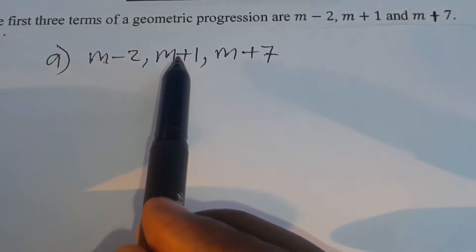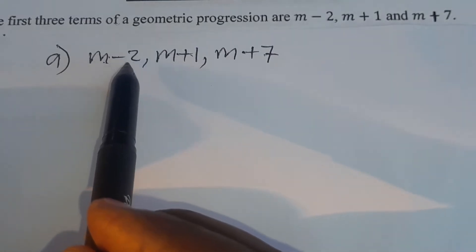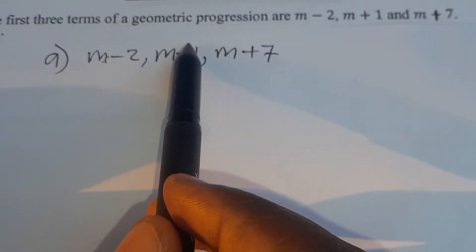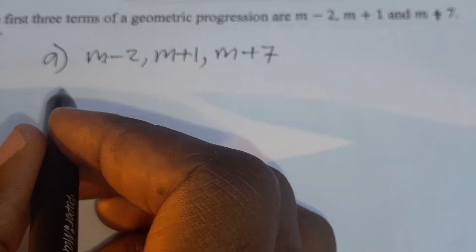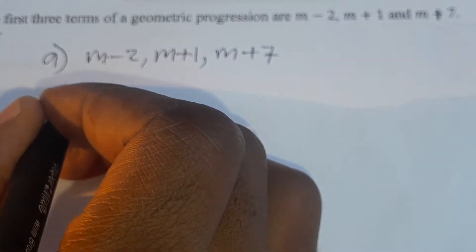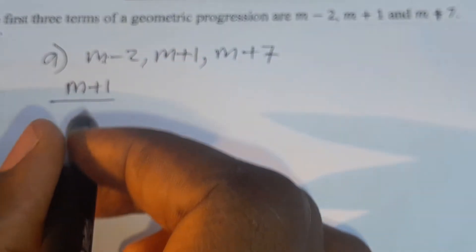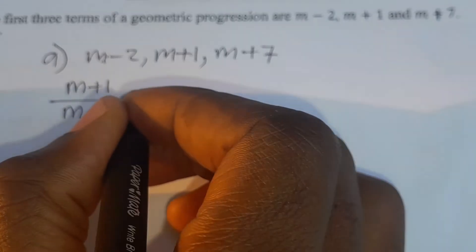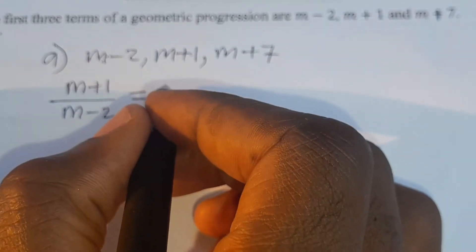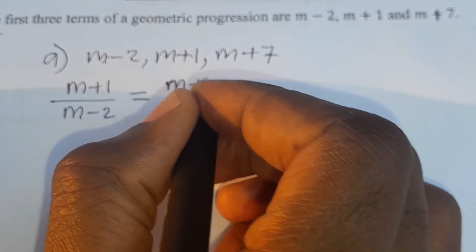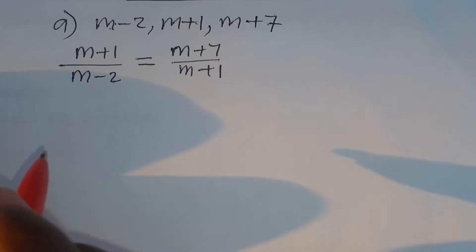We are going to divide the next term by the previous term and equate it to the next term divided by the previous term. So we are going to have m plus 1 over m minus 2 is equal to m plus 7 over m plus 1.